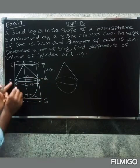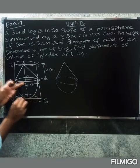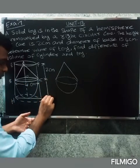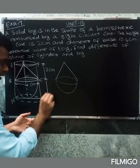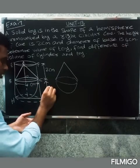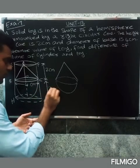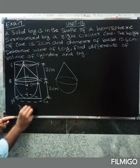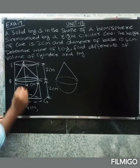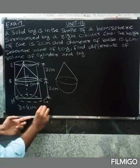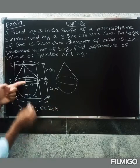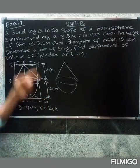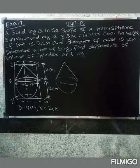The total diameter is 4 cm. So the radius is 4 divided by 2, which gives radius = 2 cm, for both the hemisphere and the cone.